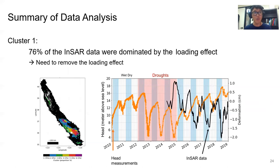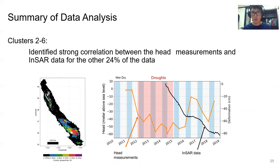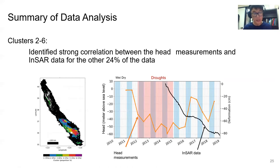In summary, 76% of the InSAR data in cluster one is dominated by the loading effect, which means we need to remove this loading effect from the InSAR data to recover head measurements. For clusters 2 through 6, we identified strong correlation between head measurements and InSAR data for the other 24% of the data, indicating high potential for recovering head measurements from InSAR.